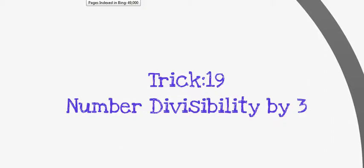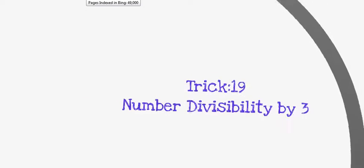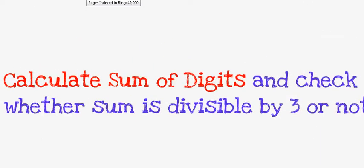Here we will find out whether the number is divisible by 3 or not. Let's look at the concept. The concept of this trick is to check the sum of the digits and see whether the result of the sum is divisible by 3 or not. If the sum is divisible by 3, then the whole number is divisible by 3.